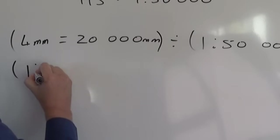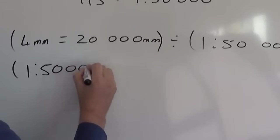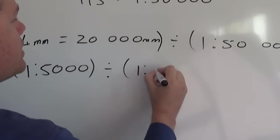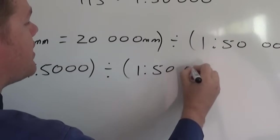1 and 20,000 divided by 4 is 5,000. So now we have 1 to 5,000 divided by 1 to 50,000.